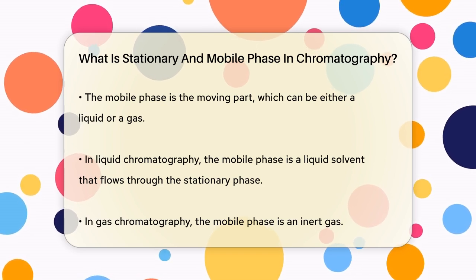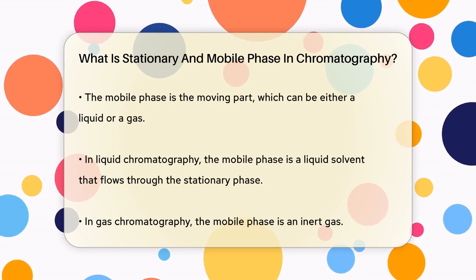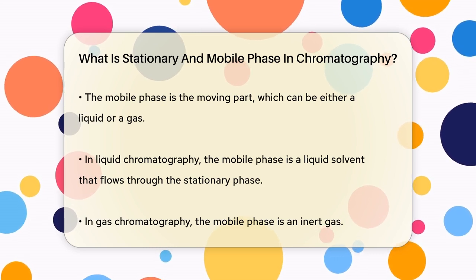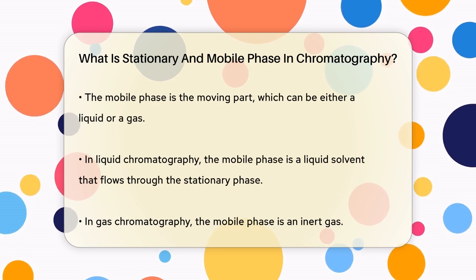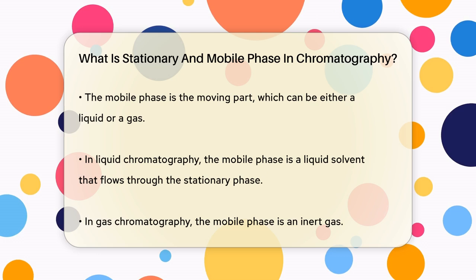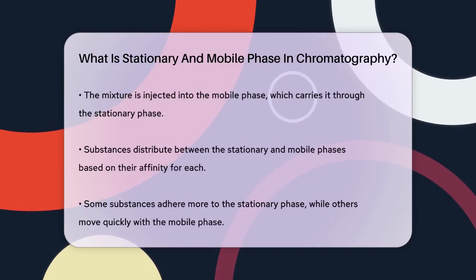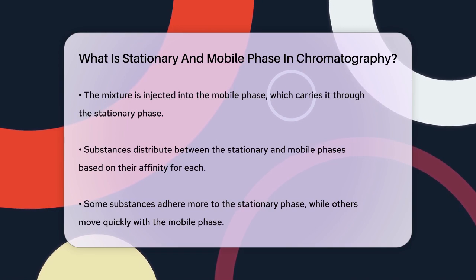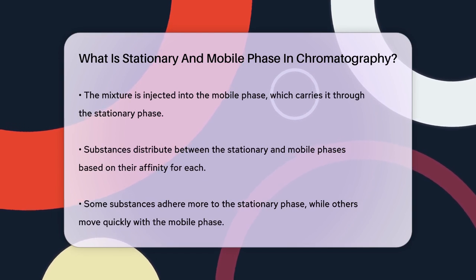This mobile phase carries the mixture of substances through the stationary phase. You inject the mixture into the mobile phase, which then flows through the stationary phase. As the substances move through the column, they distribute themselves between the mobile and stationary phases based on their affinity for each phase. Some substances will stick more to the stationary phase, while others will move more quickly with the mobile phase.